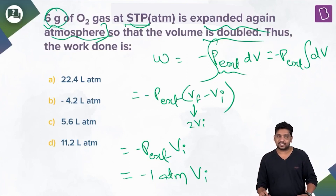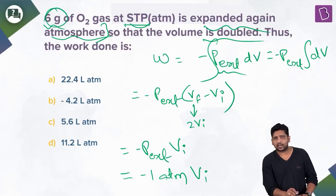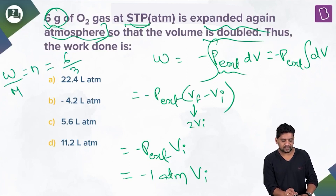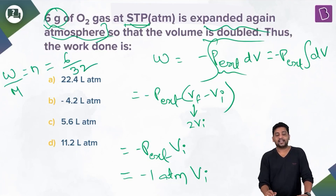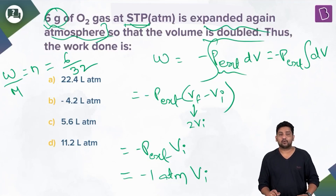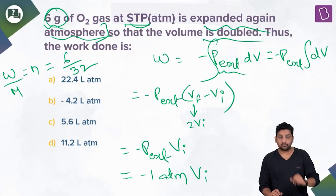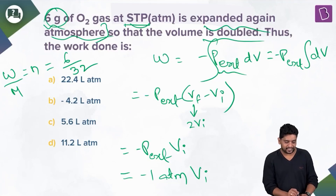At STP, moles × 22.4 L/mol gives the volume. Number of moles = mass / molar mass = 6 / 32 = 3/16 mol. Molar mass of O₂ is 32 g/mol.